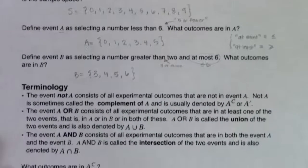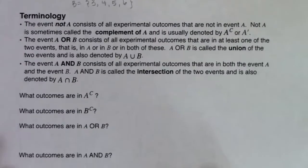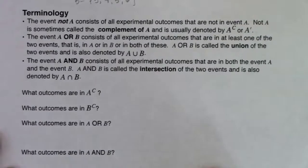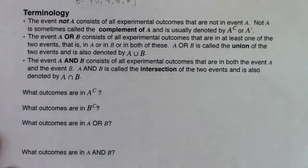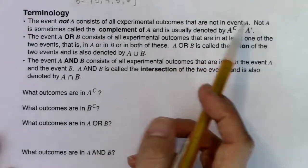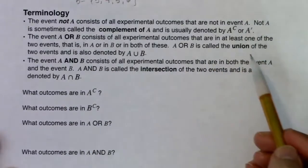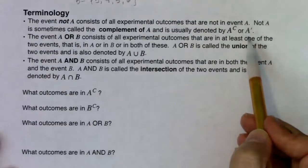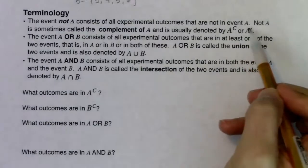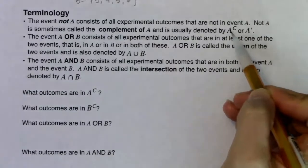Now comes a bunch of vocabulary. The three common vocab terms in basic probability are NOT, AND, and OR. The event not A consists of all experimental outcomes that are not in event A. Not A is called the complement of A, denoted A with a superscript C, or A prime. Your book uses A prime, but most of the stats community uses A superscript C.